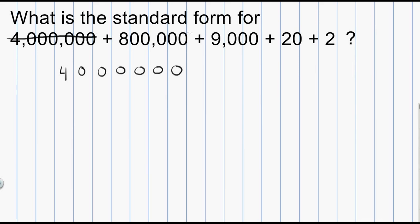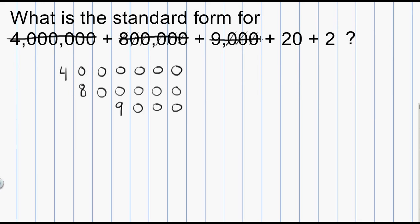Now 800,000. I like to count zeros — I have five zeros — and starting on my right column I go 1, 2, 3, 4, 5, and then add that 8. Cross it off. Now 9,000 has three zeros, so I go 1, 2, 3, and bring that 9 down. Then 20 has one zero, so I put that zero and bring the 2 down. Finally, I have a 2 with no zeros that goes into the right-side column.